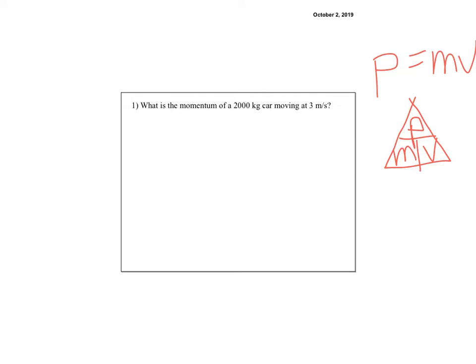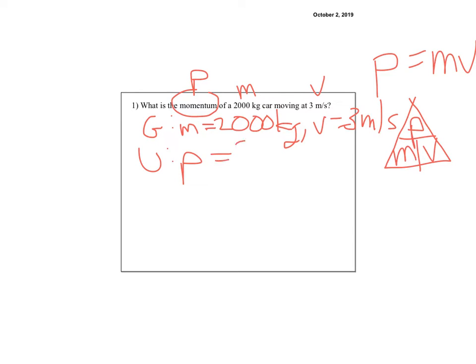It says, what is the momentum of a 2,000 kilogram car, so I know that's M, if it's moving at 3 meters per second, I know that's V. So in my given, I can put M equals 2,000 kilograms, and V equals 3 meters per second. And then my unknown is momentum. Remember, momentum's a P, so P equals question mark.